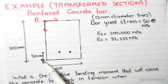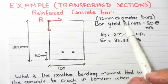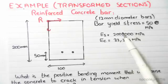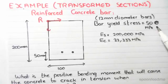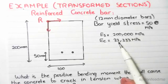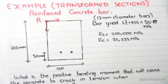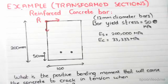The bars are 12 millimeters in diameter. The yield stress is 500 megapascals. The elastic modulus of steel is 200,000 and the elastic modulus of concrete is 33,000.